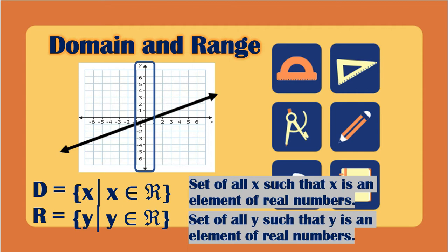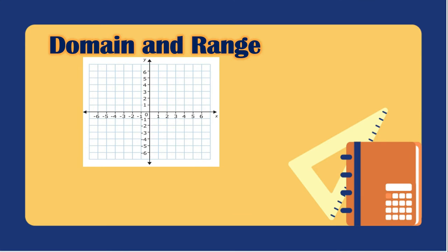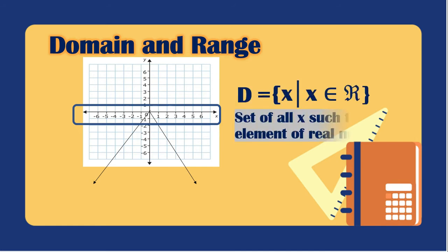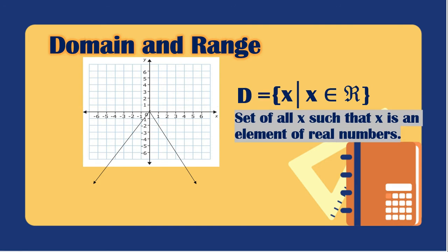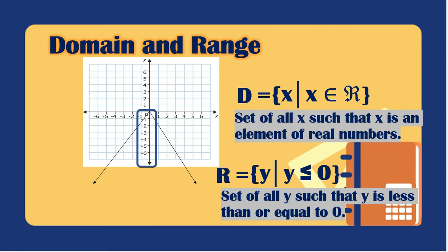Be careful: if your graph has an arrow, it means you can extend it to the left or to the right infinitely. For this graph, the domain — extending left and right with arrows — is the set of all x such that x is an element of real numbers. For the range, the graph only starts at zero going down, so the range is the set of all y such that y is less than or equal to zero. We will not be using positive integers here.